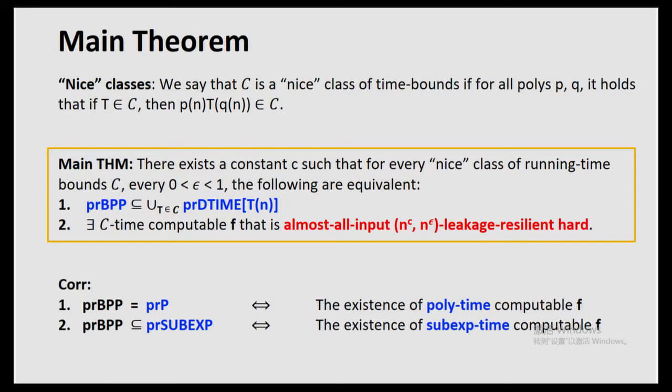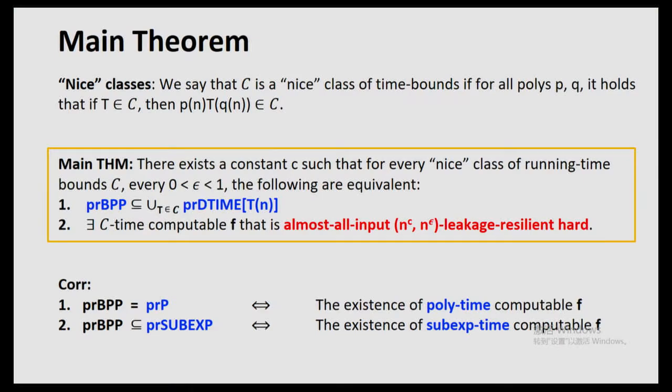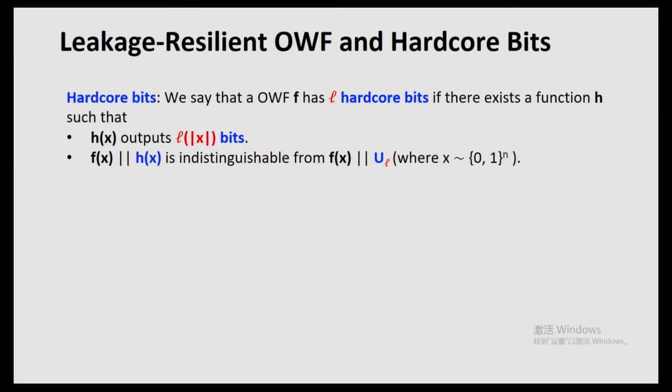So basically our main theorem shows that BPP is in DTIME(C) is equivalent to the existence of a C-computable almost-all-inputs leakage-resilient hard function. Let me now take a few minutes to mention some implications of our results in cryptography. We look at leakage-resilient one-way functions and hard-core bits. Hard-core bits are bits computable from the input of the one-way function that still look random even with the presence of F(x).